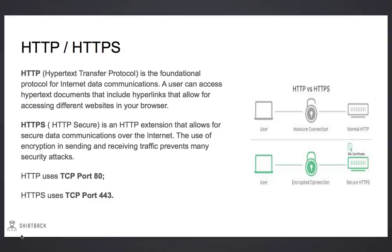HTTP is the hypertext transfer protocol — it is the foundational protocol for all internet data communications. Users can access hypertext documents that include hyperlinks allowing access to different websites. HTTPS is a secure extension of the HTTP protocol that allows for secure data communications encrypted over the internet. The use of encryption in sending and receiving traffic prevents many security attacks. HTTPS uses port 443 on the TCP protocol.